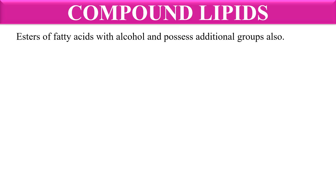So first of all, what are compound lipids? Compound lipids are esters of fatty acids with alcohol, and they also bear some additional group — they may have a phosphate group, sulfate group, etc. So they have fatty acids esterified with alcohol and they also possess some additional functional group.